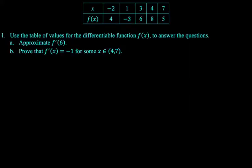Number one, use the table of values for the differentiable function f(x) to answer the questions. Part a, approximate f'(6). So we know that we have to figure out in the table what numbers six is in between. It's between four and seven, so we'll use the slope of the secant line on four to seven to approximate this.